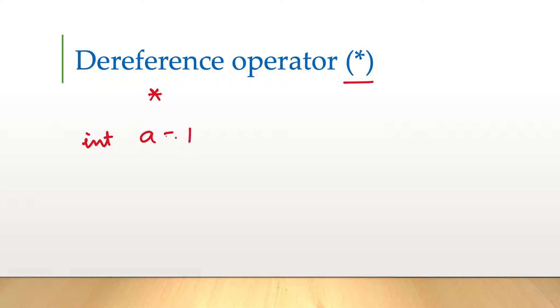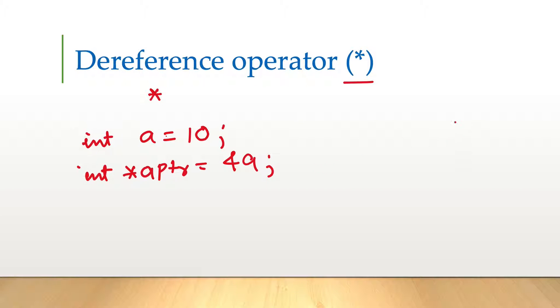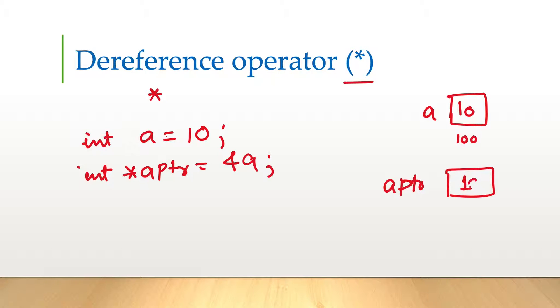Dereferencing is achieved using the dereference operator, which is the asterisk operator. So if we have one variable int a equal to 10 and we have another pointer to integer which stores the address of a — so a is here storing 10 and it is at address 100 — and there is a ptr which is storing this address, that is 100, so it's pointing to this variable.